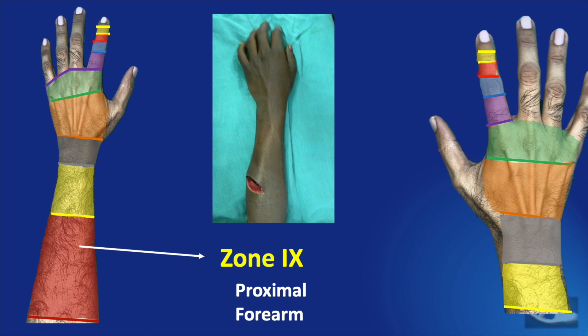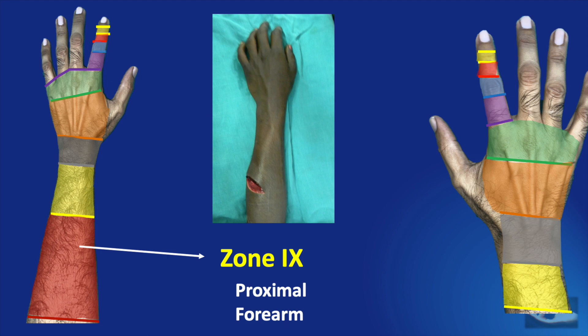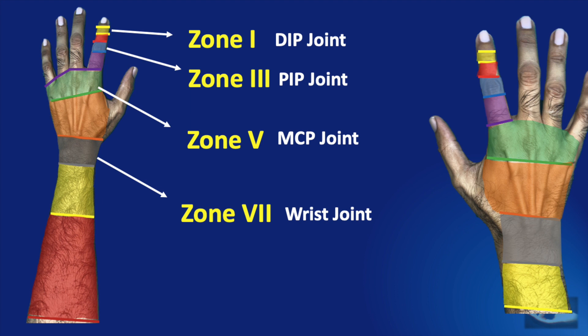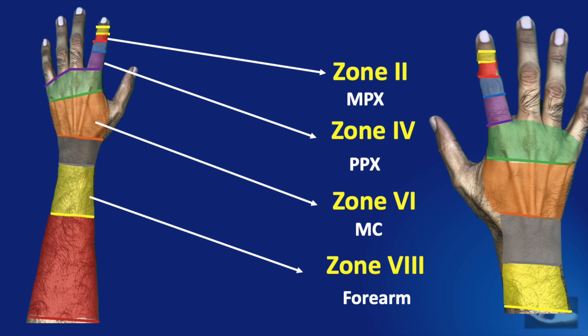Zone 9 injury described by Doyle represents injury to the extensor muscles in the proximal two-thirds of the forearm. It is easy to remember all these zones because the odd-numbered zones 1, 3, 5, and 7 overlie the joints — the DIP joint, the PIP joint, the metacarpophalangeal joint, and the wrist joint respectively — whereas the even-numbered zones 2 to 8 overlie the bony regions: the middle phalanx, the proximal phalanx, the metacarpal, and the distal forearm.